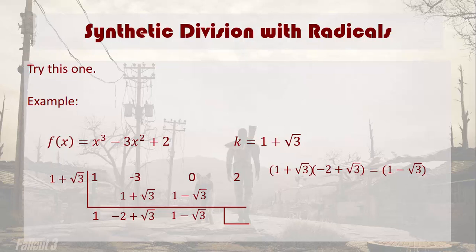Now, you have another product that you have to multiply out. You should recognize that there's not going to be a middle term when you do this. You're going to end up with 1 minus 3, which is negative 2. And once again, your remainder is 0.